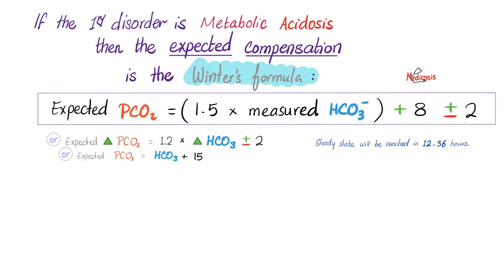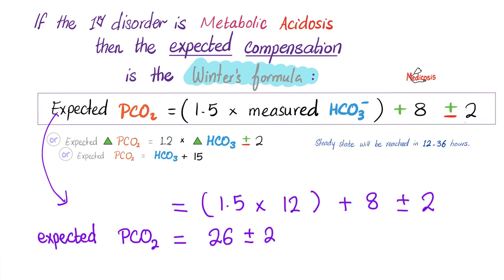So the correct answer is C. Is there another way to do this? Yes, indeed. If the primary disorder is metabolic acidosis, which it is because this lady had diabetic ketoacidosis, then the expected compensation can be estimated via the Winter's formula. It has many versions in different textbooks, but let's stick with this one. The expected carbon dioxide from normal pulmonary compensation should equal 1.5 multiplied by the measured bicarbonate, which was 12, and then you add 8 plus or minus 2.